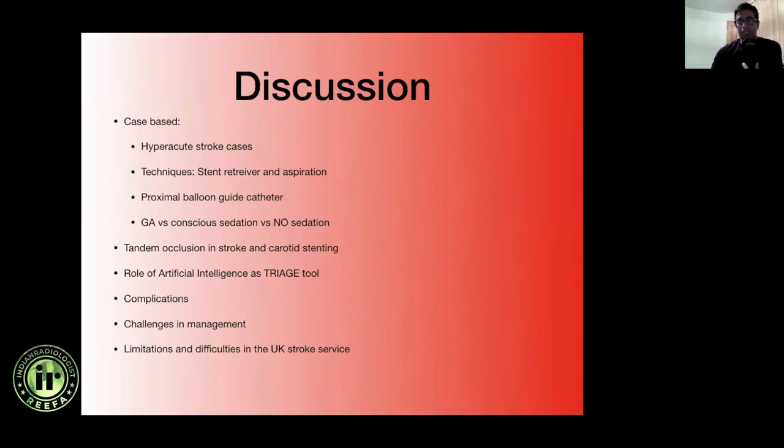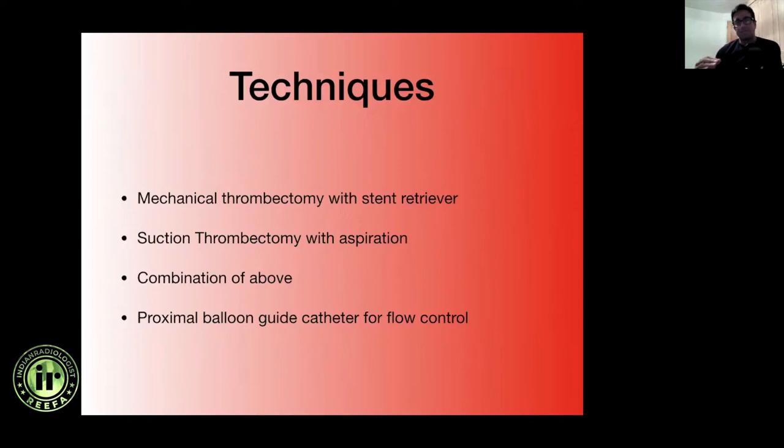Let's make certain things very clear. We now know that there are basically two techniques: either use a stent, use aspiration, or use a combination of both with a proximal balloon guide catheter, which I think is a very important adjunct in anterior circulation thrombectomies.